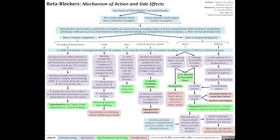Reduced chronotropy leads to bradycardia, or a reduced heart rate, which results in an inability to increase heart rate in response to stress such as shock or sepsis. Reduced inotropy leads to reduced stroke volume, which reduces cardiac output. Reducing cardiac output has the consequence of decompensation of acute heart failure and dizziness and fatigue when the brain doesn't get enough blood. Reduced cardiac output also leads to hypotension, because blood pressure equals cardiac output times systemic vascular resistance. Beta 1 receptor antagonism reduces mostly diastolic blood pressure, and thus may reduce coronary perfusion pressure.